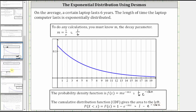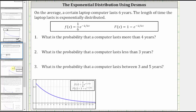Now let's take a look at some questions. Number one: what is the probability that a computer lasts more than four years, which is the probability that x is greater than four? Looking at the graph of the probability density function shown below, here's where x equals four. Because we want the probability x is greater than four, we want the area to the right of four under the curve.